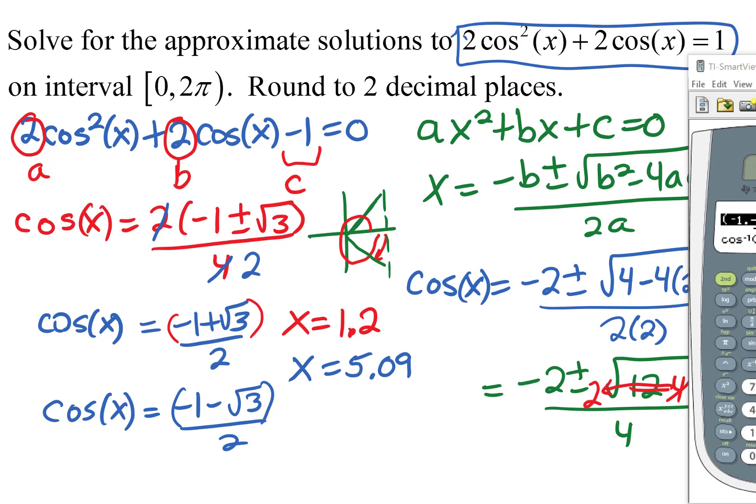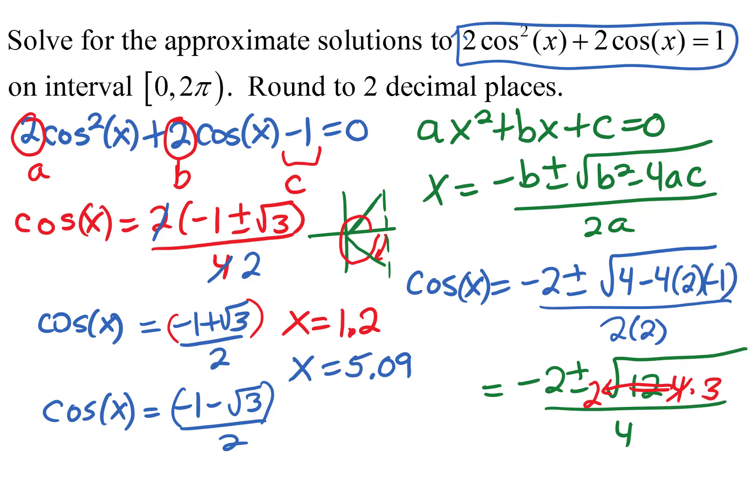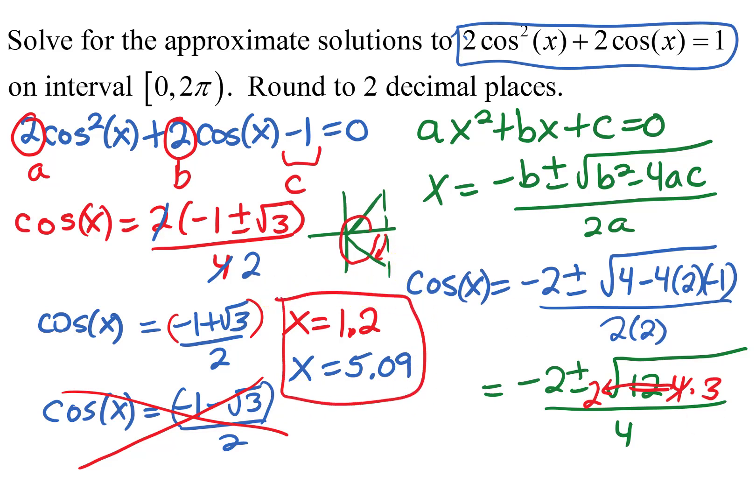Taking the inverse cosine of negative 1.366 gives a domain error. The reason is that the range of cosine x is from negative 1 to 1 — you can never get a cosine value outside that interval. So there is no angle whose cosine equals negative 1.366. This means that value from the quadratic formula produces an extraneous solution, and our two final answers are x equals 1.20 and x equals 5.09.